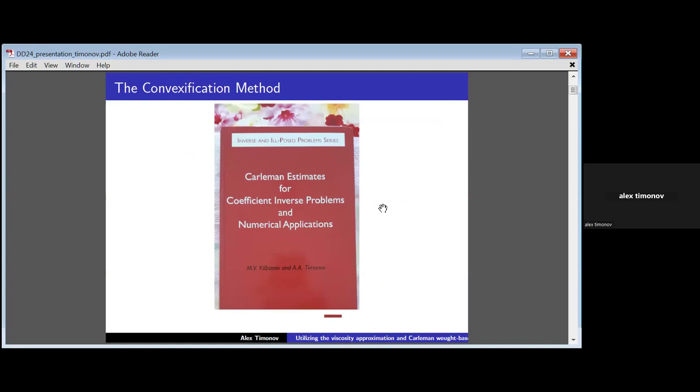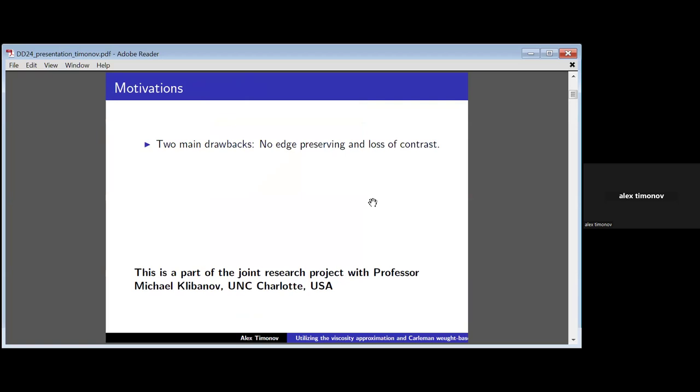It was introduced to the community of inverse problems, the method of convexification. In short, it allows us to reduce a non-linear coefficient inverse problem to some variational problem to minimize the functional, which allows Carleman-like functions, and as a result, it allows some global convergence. But I'm not speaking about the original method. Now I will be speaking about some motivation first to develop a new version of this method.